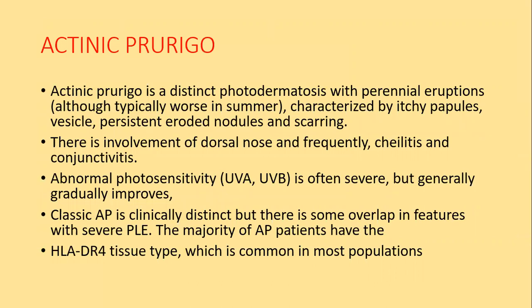The third disease is actinic prurigo. Actinic prurigo is a distinct photodermatosis with a perennial eruption occurring throughout the year but typically worse in summer, characterized by itchy papules, vesicles, persistent eroded nodules, and scarring. There is involvement of the dorsal nose and frequent cheilitis and conjunctivitis. Abnormal photosensitivity to UVA and UVB is often seen but generally gradually improves. Classical actinic prurigo is clinically distinct, though there is some overlap in features with polymorphic light eruption. The majority of actinic prurigo patients have HLA-DR4 tissue type.